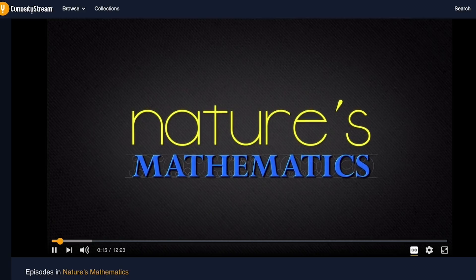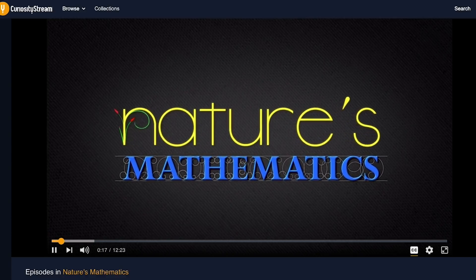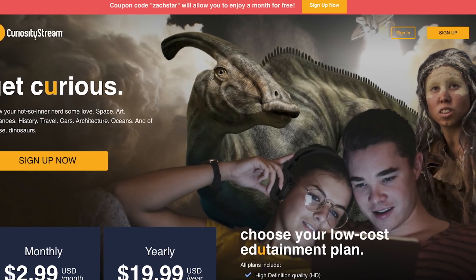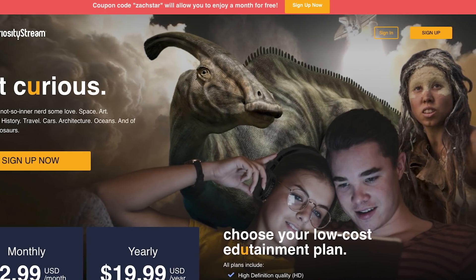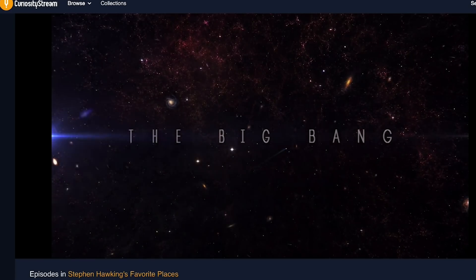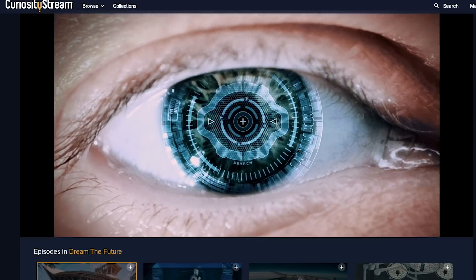CuriosityStream is available on a variety of platforms worldwide, and it only comes out to $2.99 per month. But if you sign up by using the link below, you'll get your first month's membership completely free, so no risk in giving it a try. And with this, you'll have unlimited access to top documentaries that I'm sure many of you will enjoy.